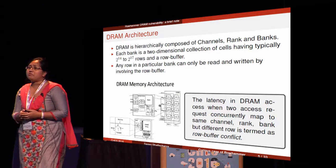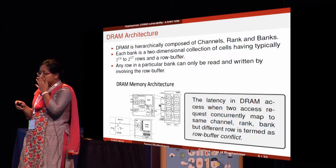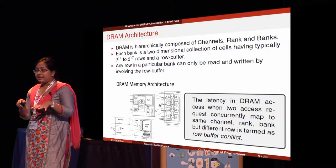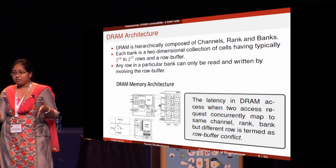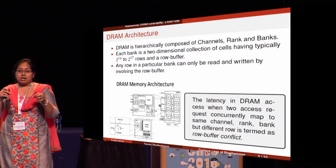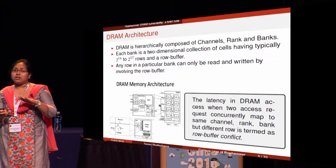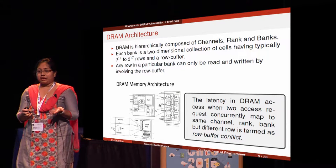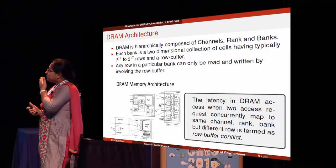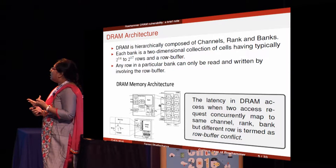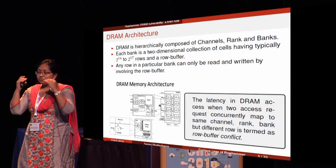A brief overview of DRAM structure: DRAM is hierarchically composed of channels, RAMs, and inside there are banks. The RAM slots you see inside the PCB — those are the cards given to us. They can be single-channel or double-channel depending on the vendor. A particular channel divides into RAMs and further into banks.